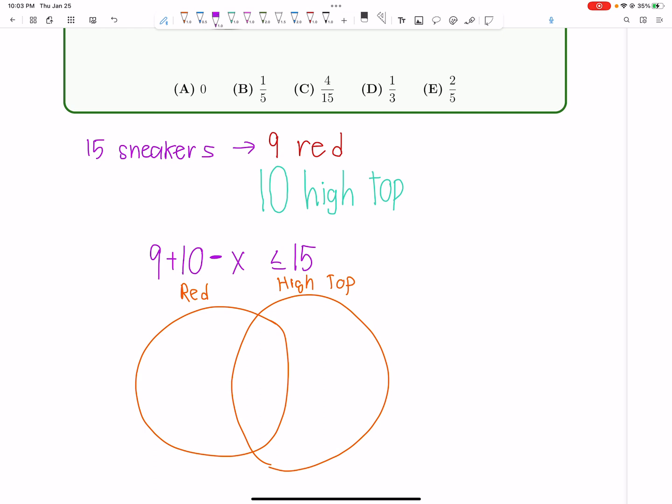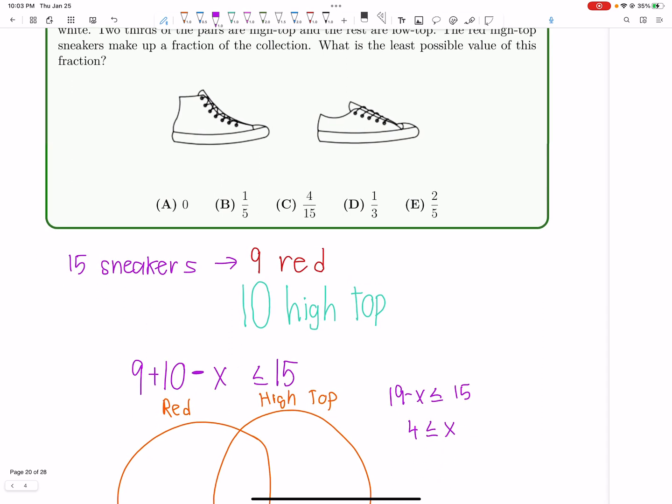Now we just solve it, right? 19 minus X is less than or equal to 15. So we get 4 is less than or equal to X. So X is at least 4.